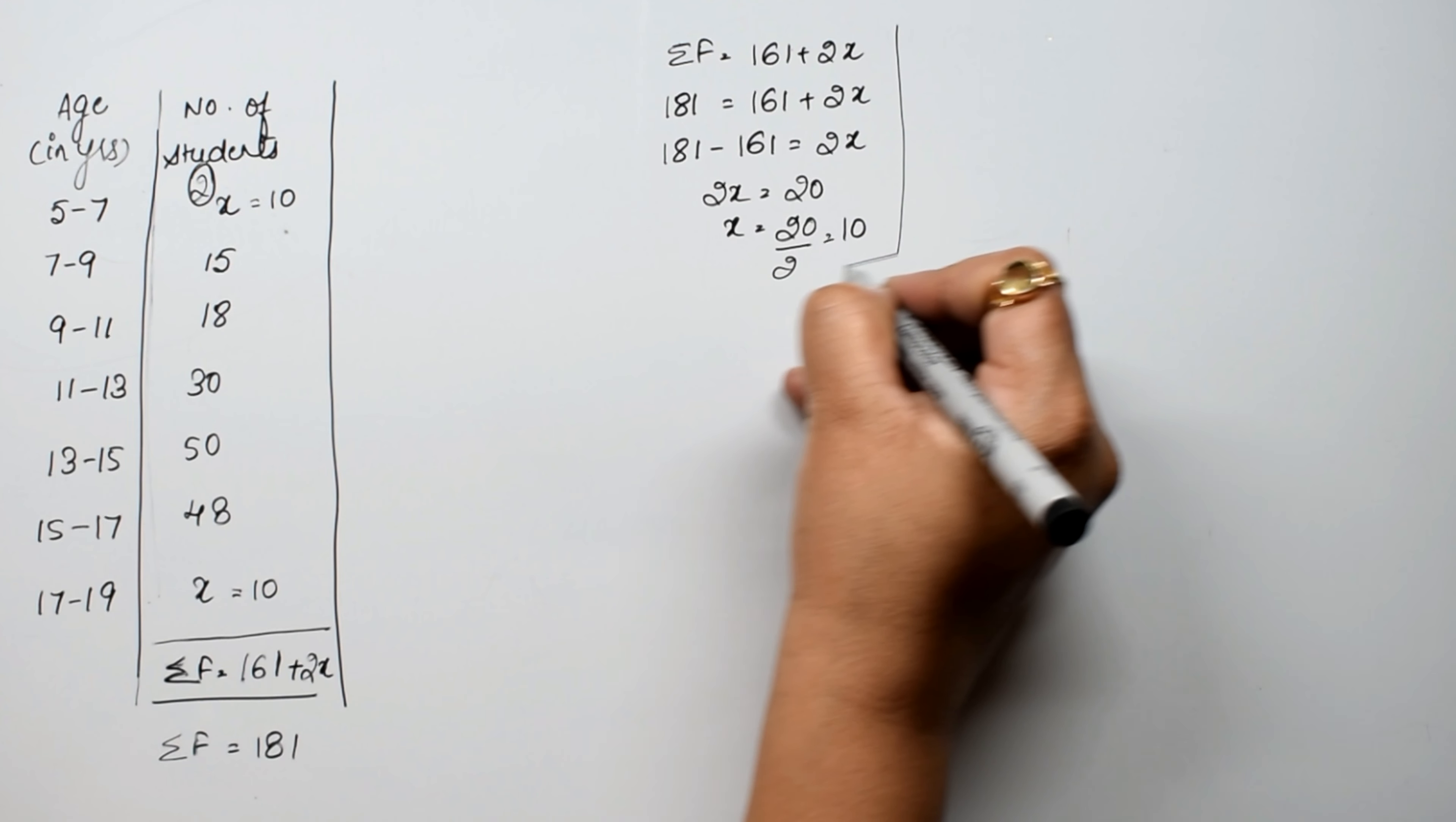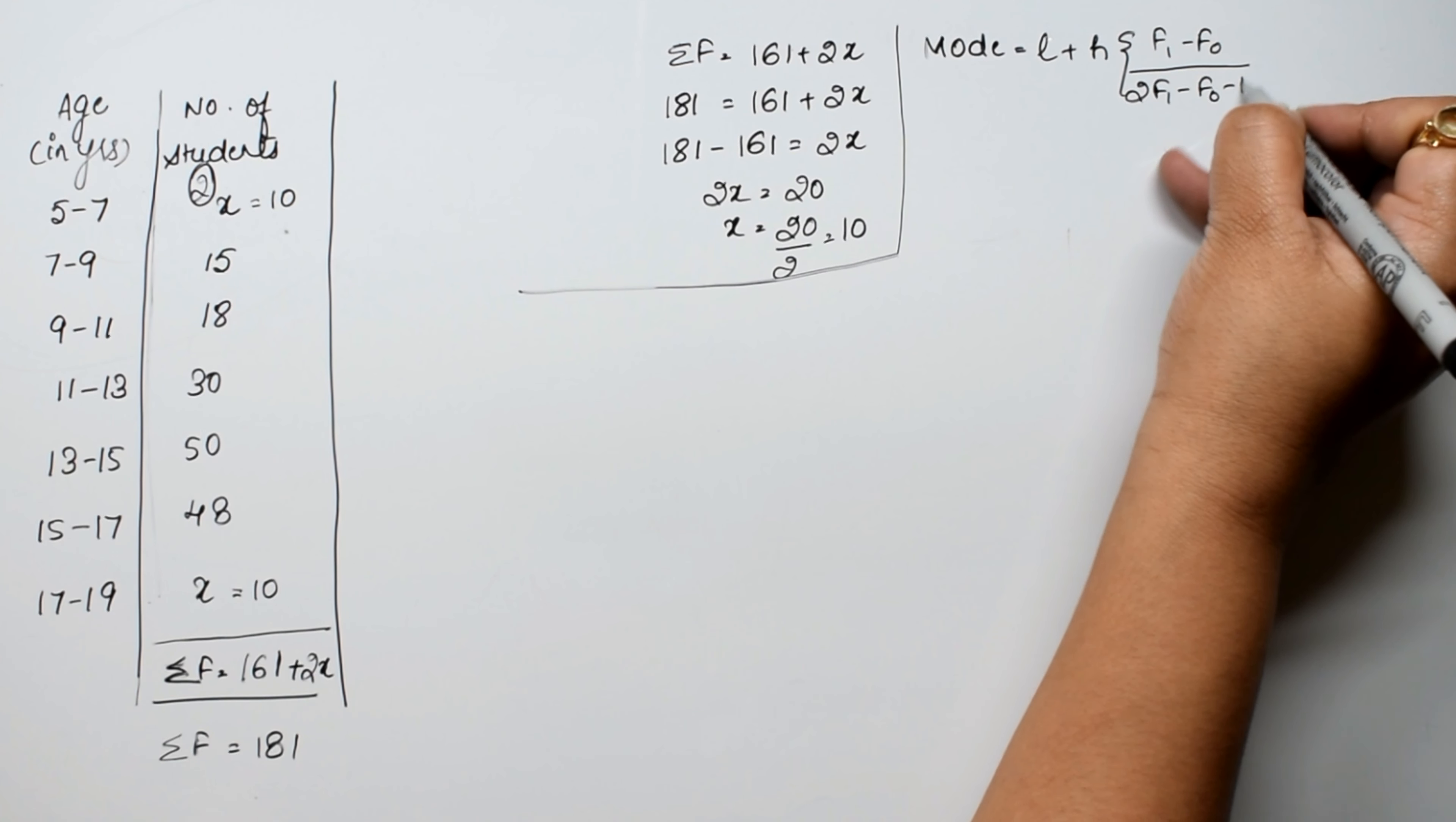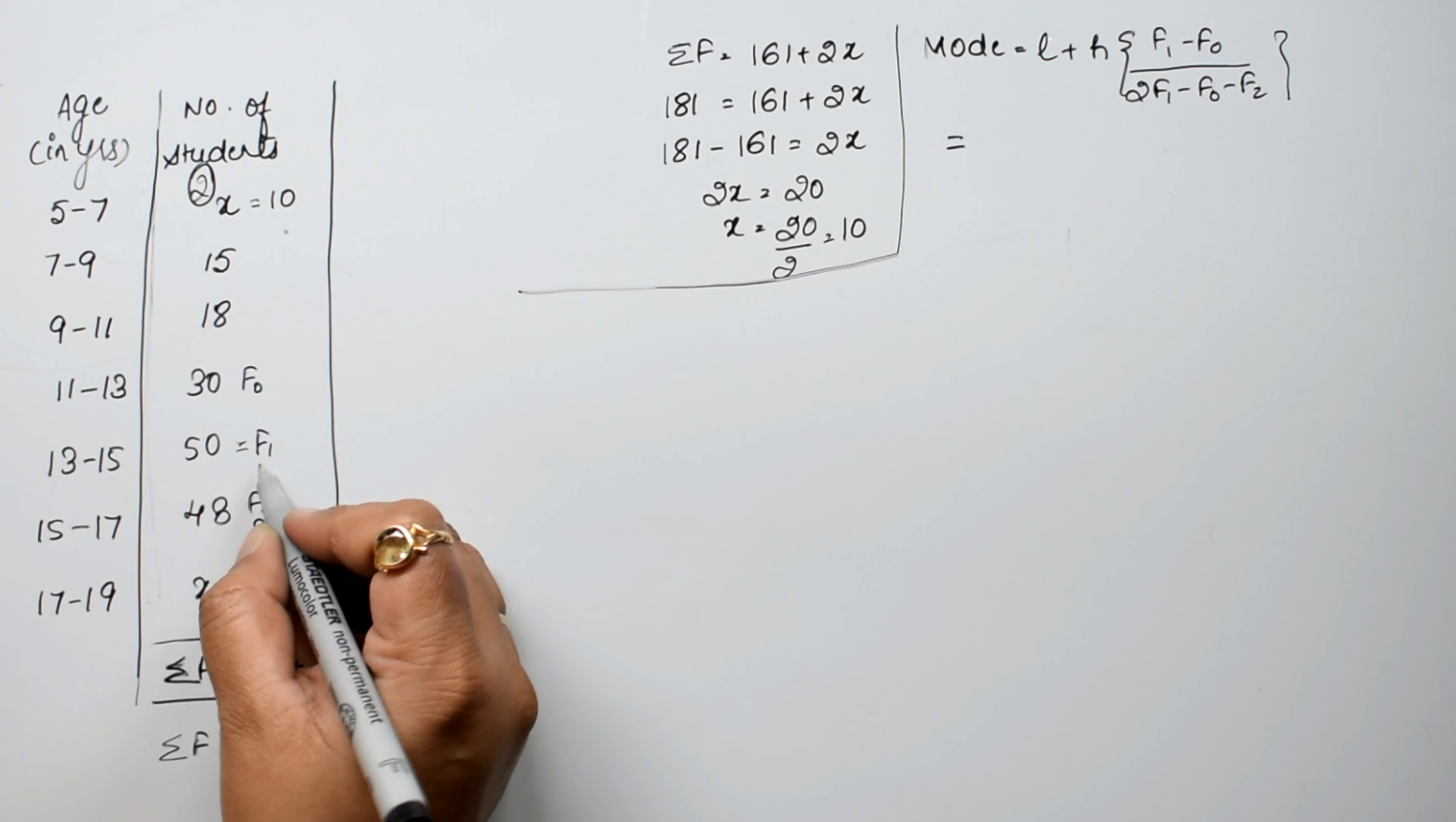Now what do we need to find? We need to find mode. So the mode formula is L plus H into f1 minus f0 upon twice of f1 minus f0 minus f2. So how will we find this? Look, the highest frequency is 50. That's why I found the missing frequencies first, so we know the values. And from this we have f0, then f1, f2. So now look, the lowest class boundary for the modal class is 13.